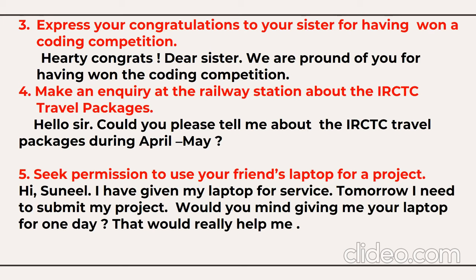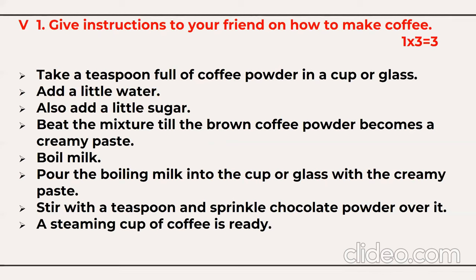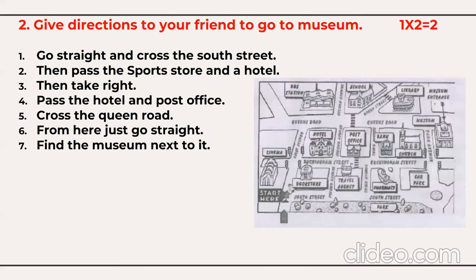Language functions are very scoring — go through my special video via the description box. Instructions: how to do something, for example how to make coffee, carries three marks. When writing instructions, mention the main verb first — take, beat, boil, pour, stir. Directions carry two marks and are compulsory with no choice. Use terms like: go straight, cross the South Street, pass the sports store, take right, pass the hotel, cross the Queen Road. A useful phrase is 'follow your nose,' meaning go straight.